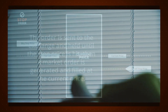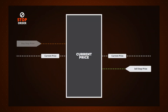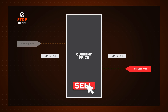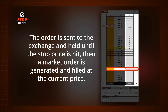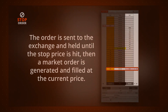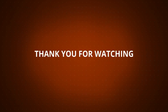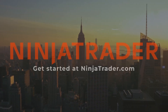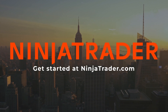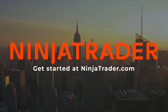When placing a sell stop order, the stop order price must be set below the current market price. Then once you click sell, the order is sent to the exchange and held until the stop price is hit. Then a market order is generated and filled at the current price. Start your futures trading journey with NinjaTrader. We look forward to guiding you every step along the way.